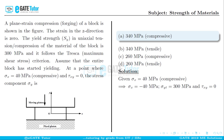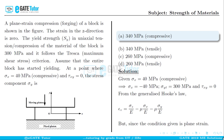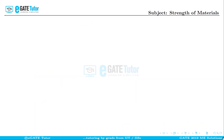From the generalized Hooke's law, the strain in the Z direction is: epsilon_z = sigma_z/E - mu*(sigma_x/E) - mu*(sigma_y/E). Since it is a plane strain condition, epsilon_z = 0. Simplifying, we get sigma_z = mu * (sigma_x + sigma_y).